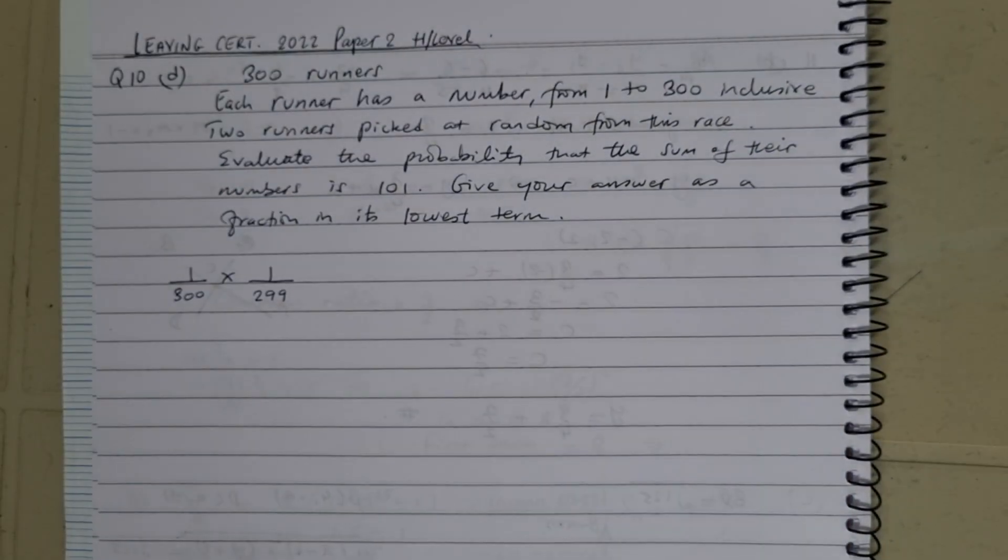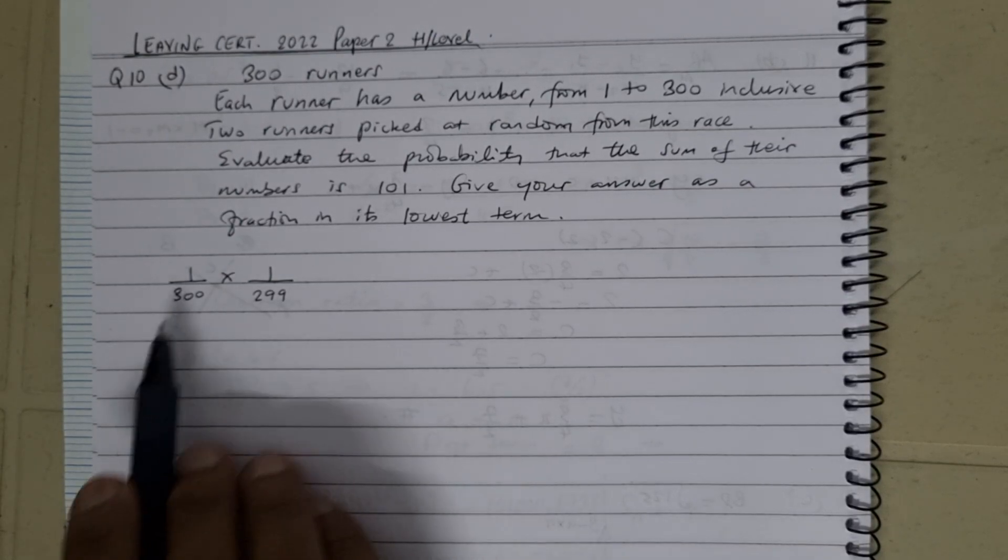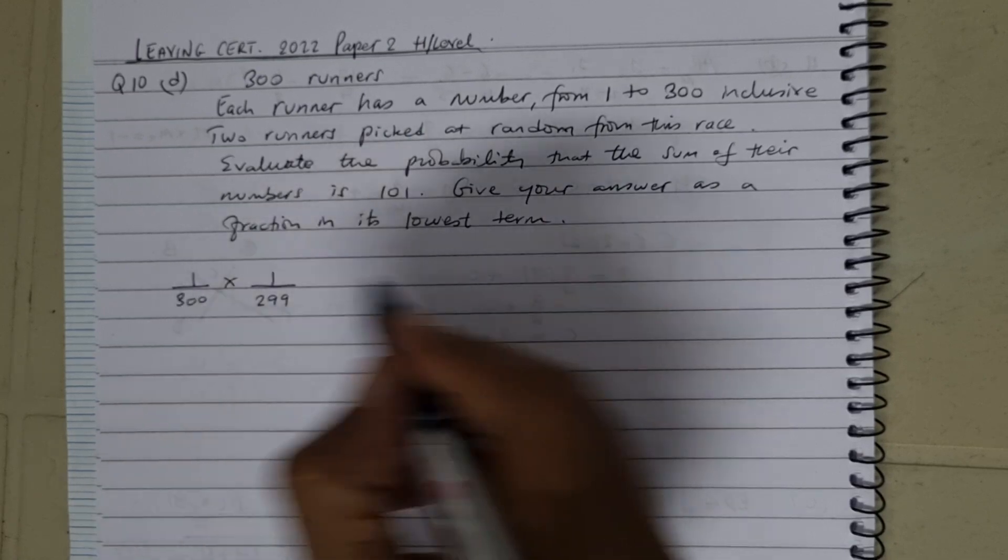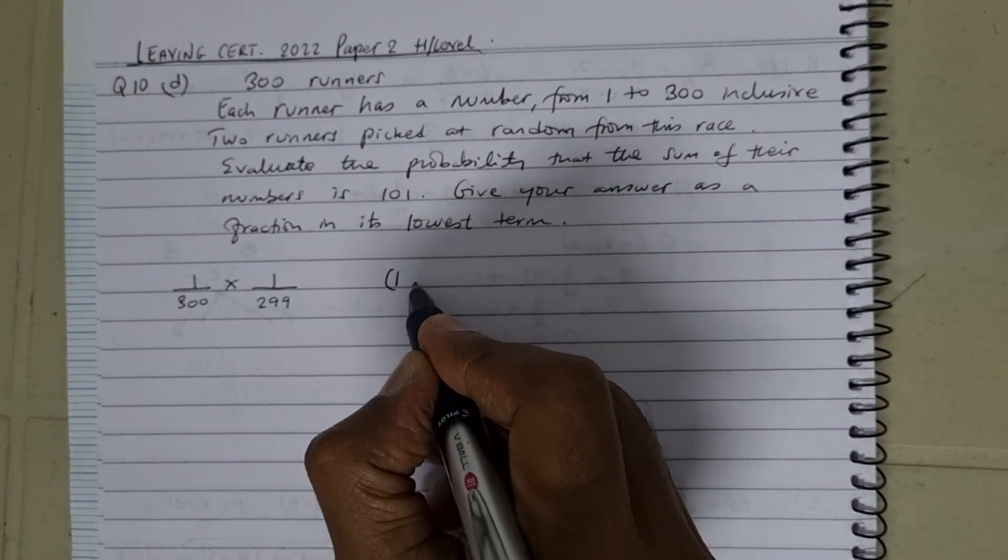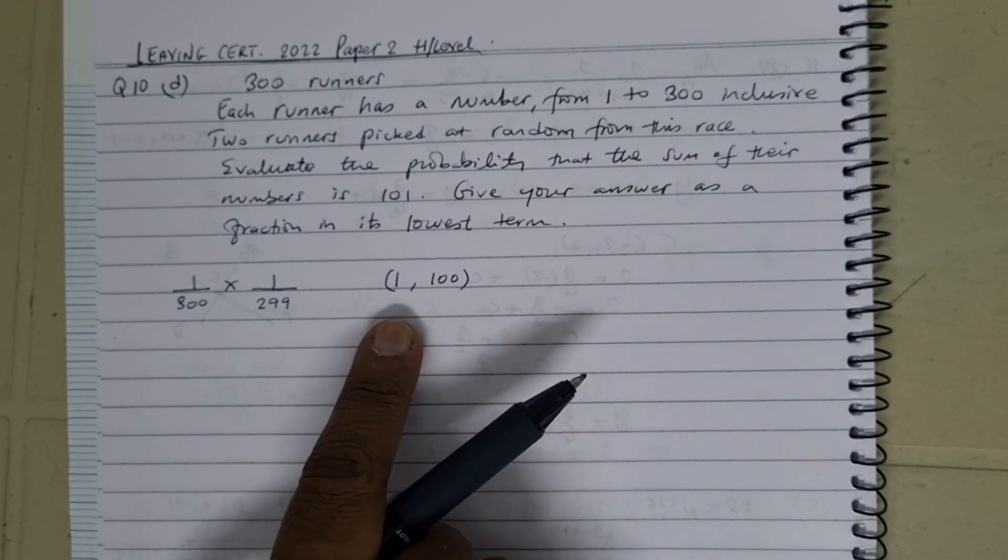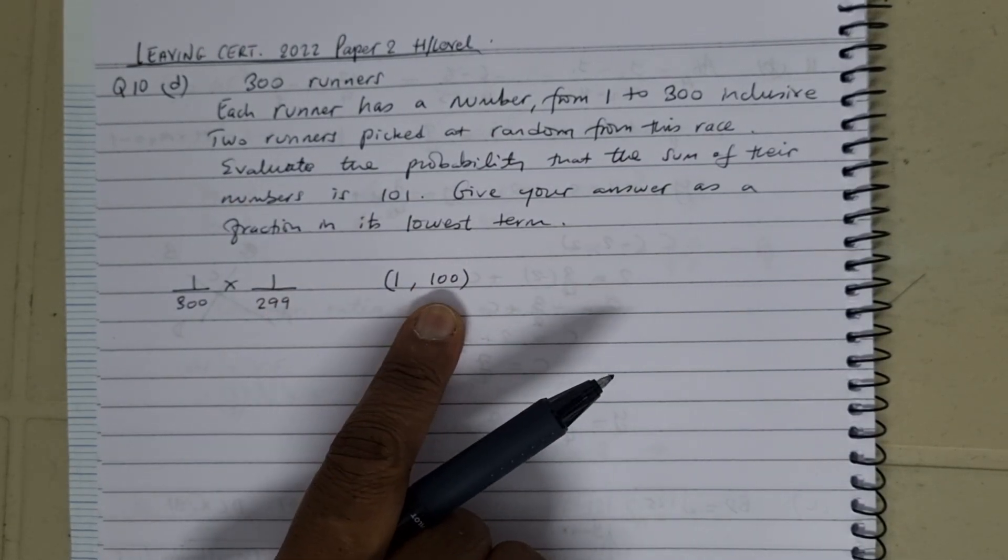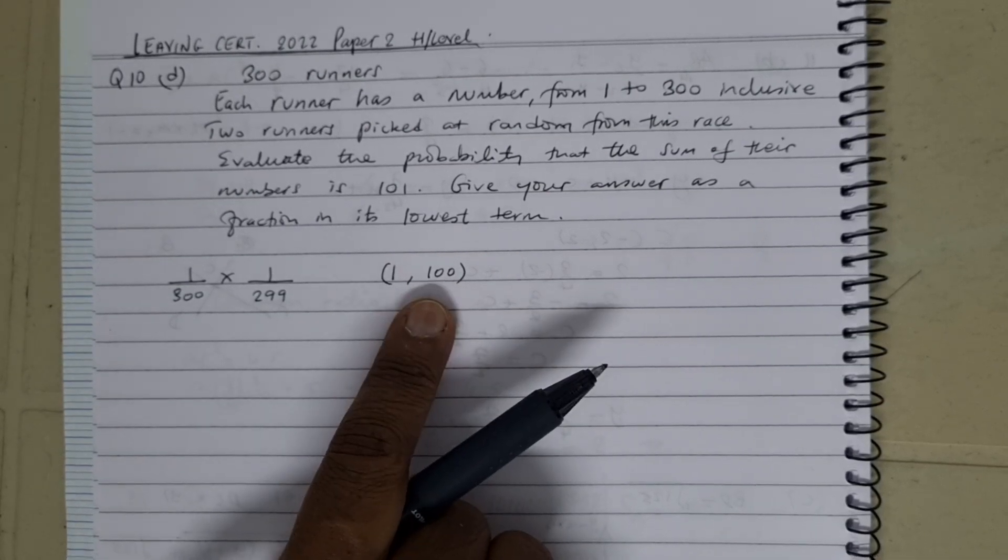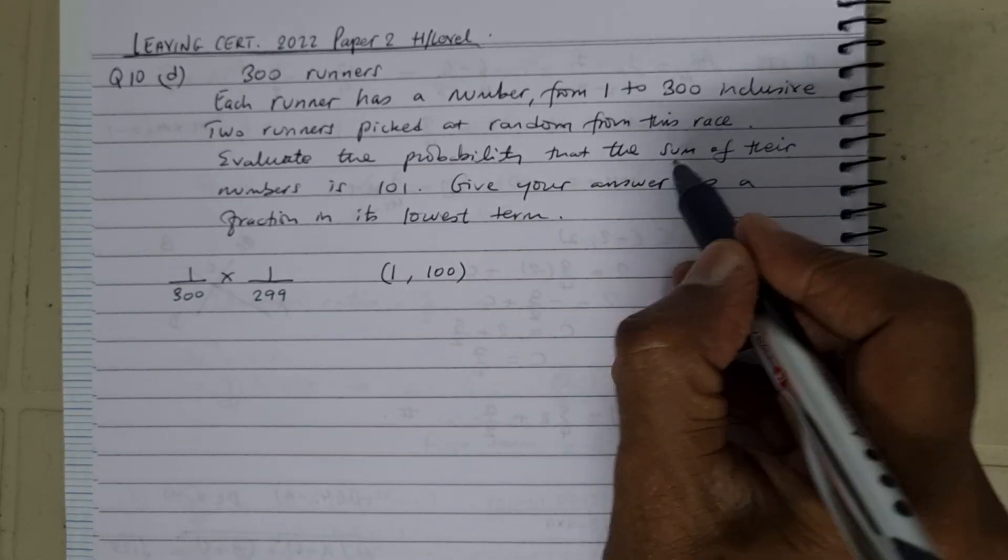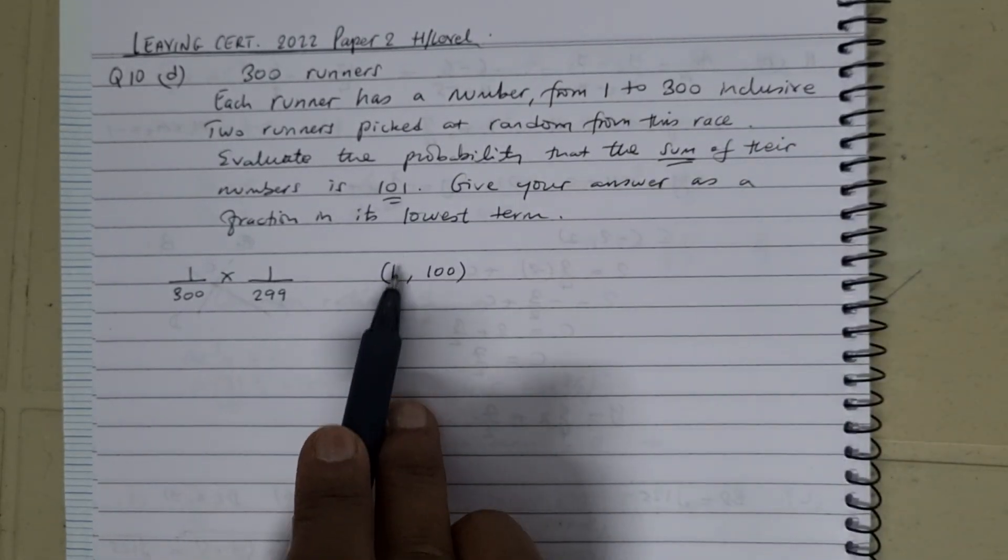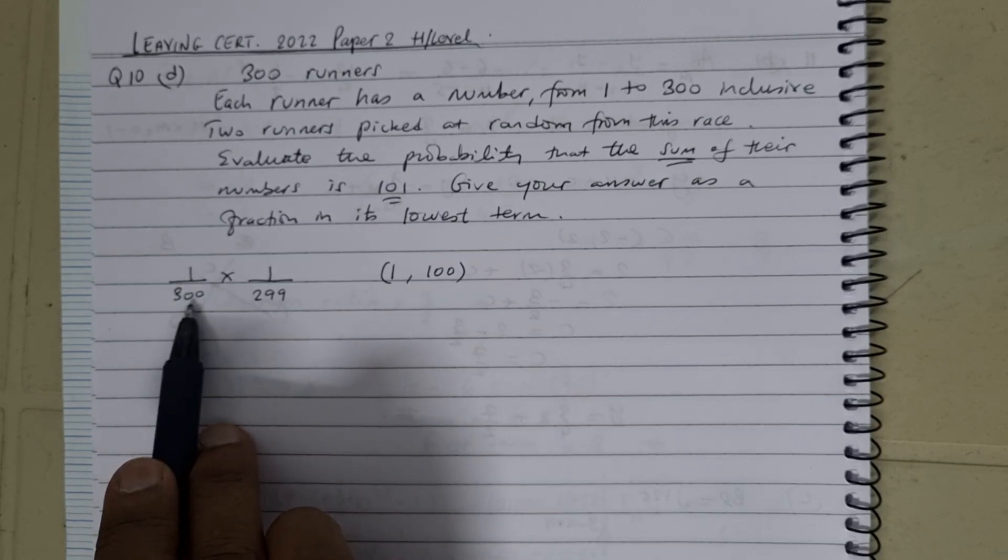Now remember, we can have a pattern here. If you were to pick the first person having number 1, and the second person, the second runner in the race, would be having number 100, we see that 1 plus 100 is 101 because the sum's got to be 101. So the probability of picking the person having number 1 is 1 over 300, and then...